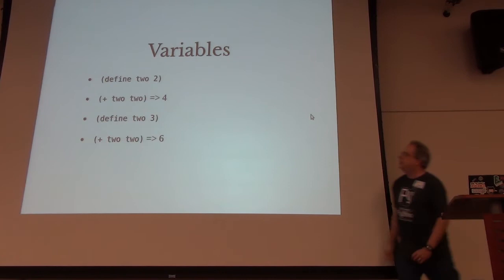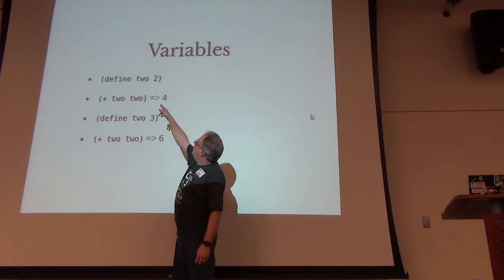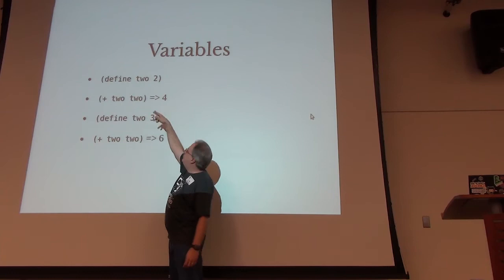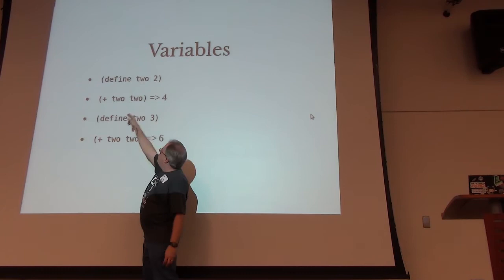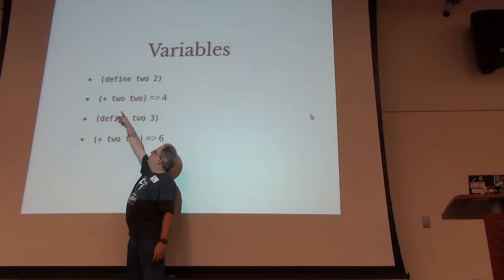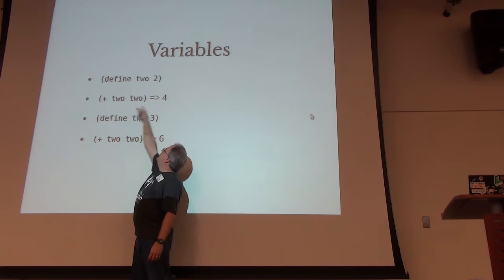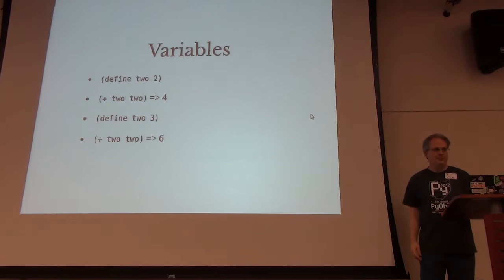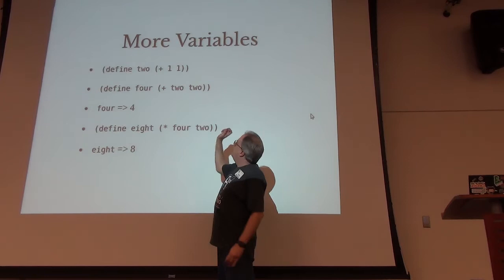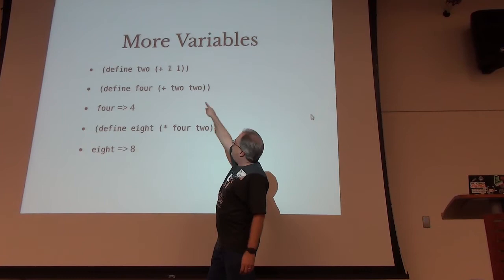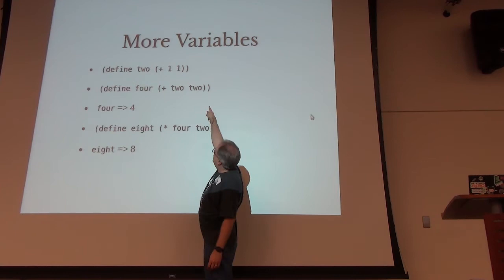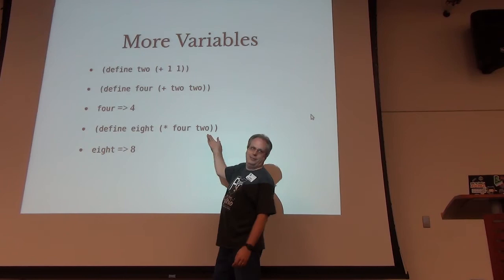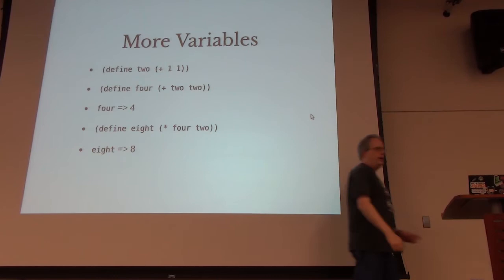To define a variable, you say 'define', then the variable name, then the value. So if we define 2 as 2 — just to be confusing — adding 2 and 2 gives 4. If I redefine 2 as 3, then adding 2 and 2 gives 6. So 2 and 2 equals 6. You can also have a variable take the value of an operation: define using '(+ 1 1)' gives 2; add those to get 4; multiply 4 and 2 to get 8.